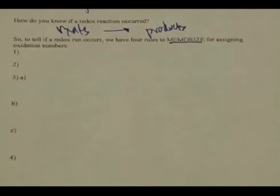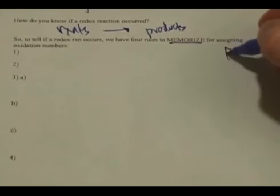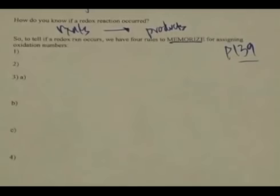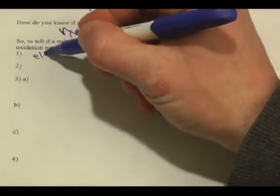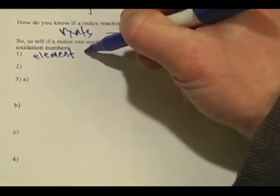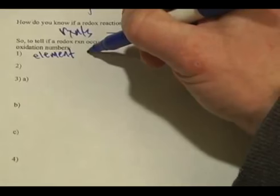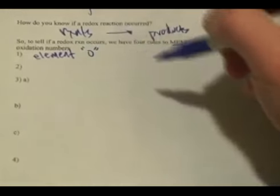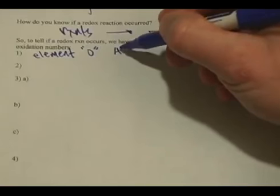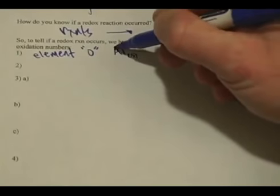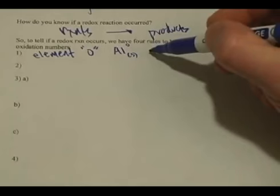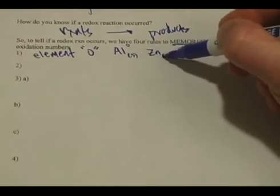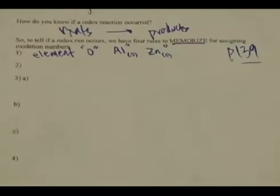These rules are outlined in your textbook as well, and I'm going to summarize them here in the notes on page 139. Number one: if an atom is in its elemental form, it has an oxidation number of zero. Examples would be aluminum solid — it has a charge of zero. Zinc just by itself solid would have a charge of zero.